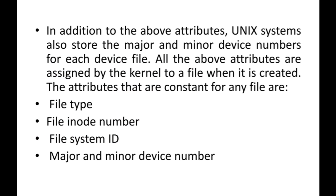In addition to the above attributes, when you create a particular file in UNIX, it can also store the major and minor device numbers for each device file. So with file type, I told you — you can create a text file, an image file, a device file, or a regular file. If you create a device file, then the major and minor device numbers will also be included in the attributes.